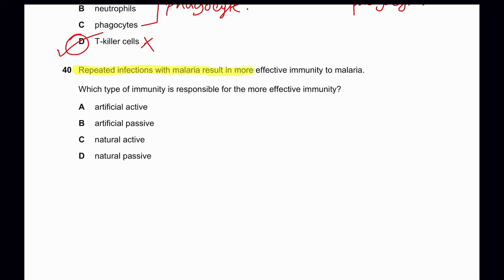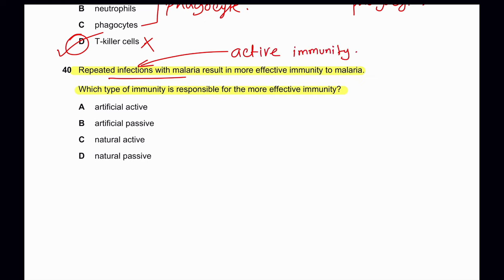Question 40: Repeated infection with malaria results in more effective immunity. Which type of immunity is responsible? When infection is caused naturally, this is active immunity. It is natural because the person contracted the disease. Artificial options are wrong. Natural and active immunity is the correct answer. So 40 answer is C. That's all for this paper — thank you for watching. I hope this gives you a better idea of choosing correct answers. Write in the comments if it helps, and subscribe to the channel if you want more videos like this.